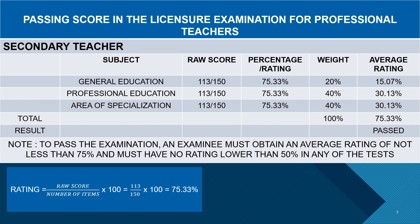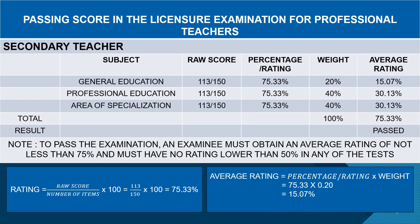Now we will get the average rating. You will notice that the weights for all subject areas for the secondary teacher examinee are different from those for elementary education. In the secondary teacher examinee, the general education subject has a 20% weight, while professional education and area of specialization both have a 40% weight. To get the average rating, the same process is used: percentage or rating times the weight. For general education, 75.33% times 0.20 gives 15.07%.